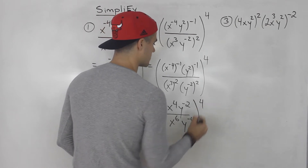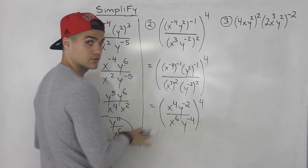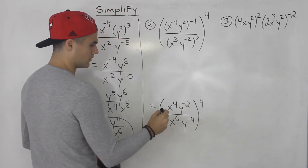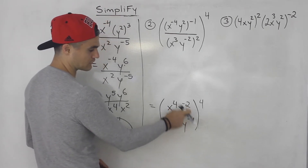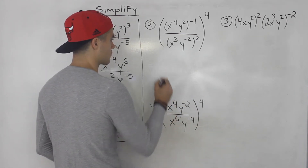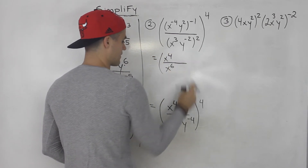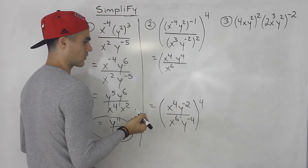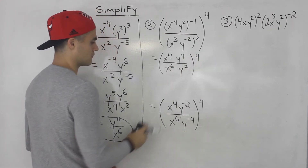From here, let's simplify. Negative four times negative one gives us positive four. That gives us y to the negative two. All over x to the six, and y to the negative four — all to the power of four. Now I'm going to flip the negative exponents: y to the negative two comes down to the denominator, y to the negative four comes up to the numerator. So I'll have x to the four over x to the six, with y to the positive four on top and y to the positive two on the bottom, all to the power of positive four.